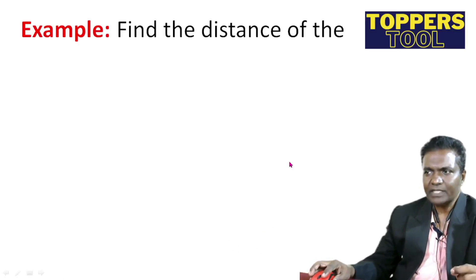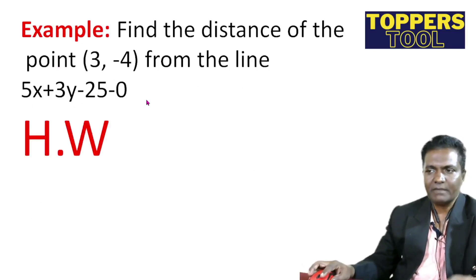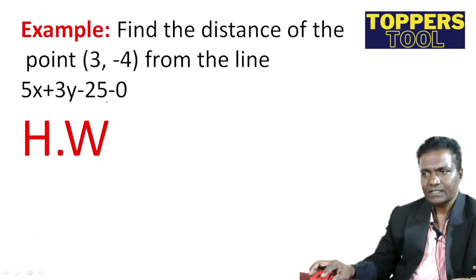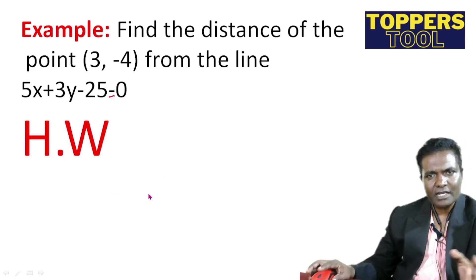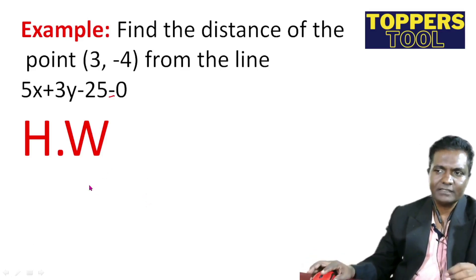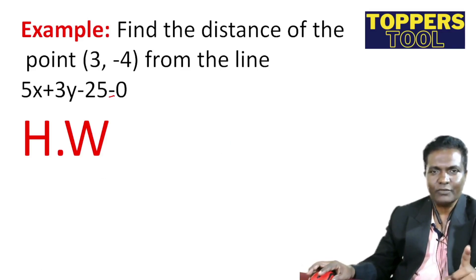Now for homework: find the distance of the point (3, minus 4) from the line 5x plus 3y minus 25 equal to 0. Note: if the mod gives a negative value, take only the positive value since distance is always positive. I hope you will do this. In the next session we will discuss two more important examples. Take care and bye bye.